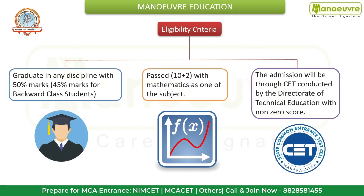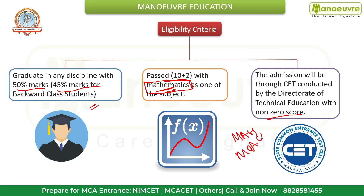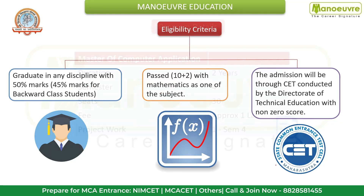For the eligibility criteria, the candidate must be a graduate in any discipline with 50% marks — 45% for SC/ST or PWD category. Students must have passed 10+2 with Mathematics as one of the subjects, which is a mandatory requirement to pursue the MCA program. Admission will be through CET conducted by the Directorate of Technical Education, with a non-zero score required — meaning candidates must crack the Maharashtra MCA CET entrance exam.